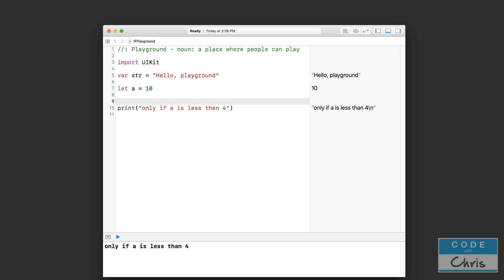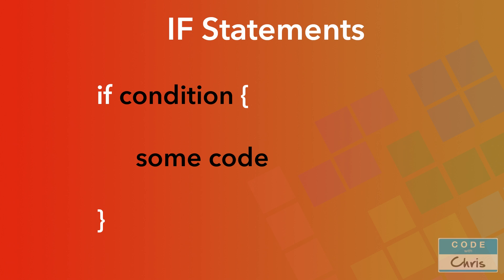Let me show you what that syntax looks like. If you're not familiar with programming terms, syntax is simply the grammatical structure of the language — the keywords to use and how we go about declaring an IF statement. It all starts with the IF keyword. Following the IF keyword, we have the condition we want to check. And following the condition, we have a set of curly brackets. Inside the curly brackets is where we put the code we want to run if that condition is true. That's your very basic IF statement.